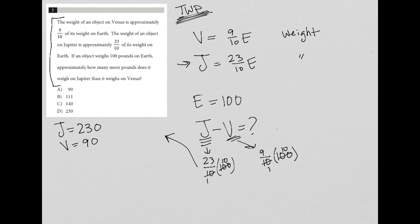Now because I want the difference, approximately how many more pounds does it weigh on Jupiter, I want the difference between Jupiter and Venus. So I'm going to take 230 minus 90. What I get when I do that is that the answer is 140, and therefore choice C is correct.